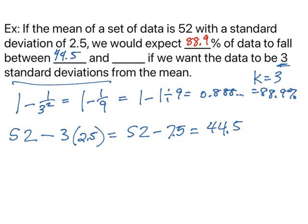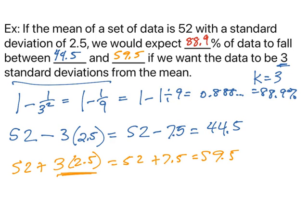To find the upper value, I would take 52 plus 3 times 2.5, because three standard deviations, that's what this means, 3 times 2.5. So I get 52 plus 7.5, which is 59.5, and that's the upper part.